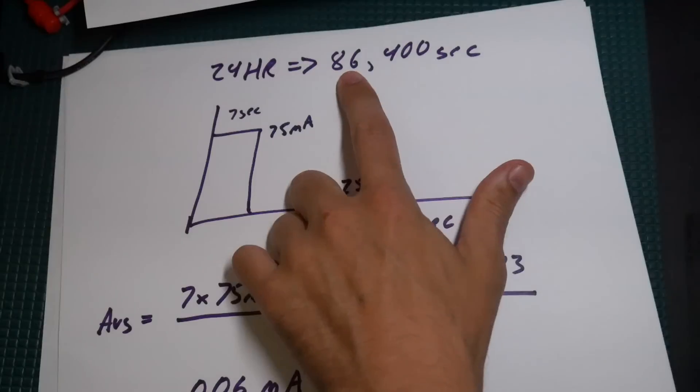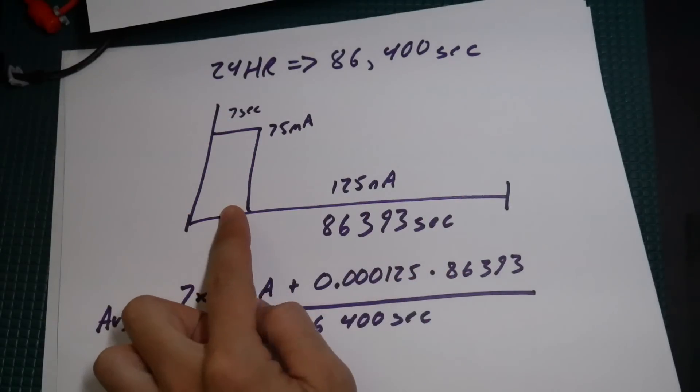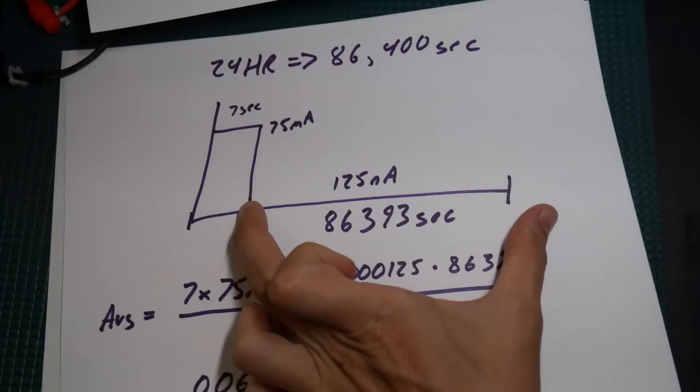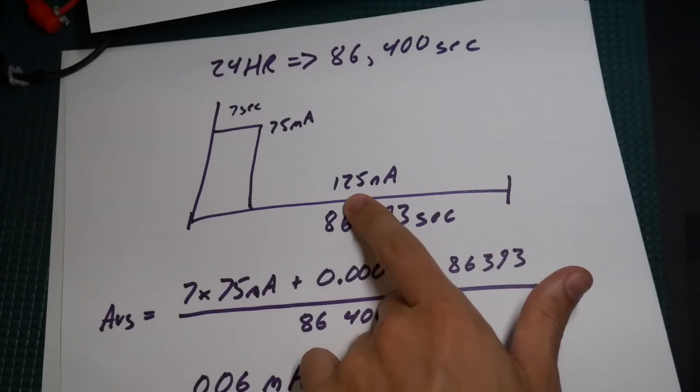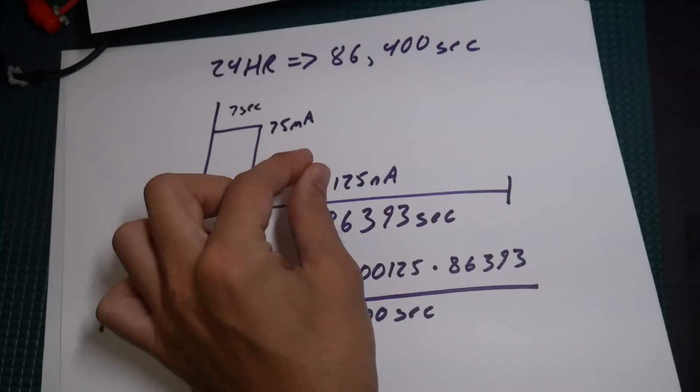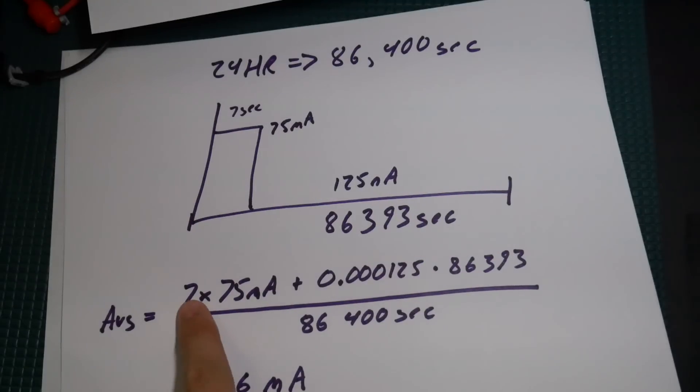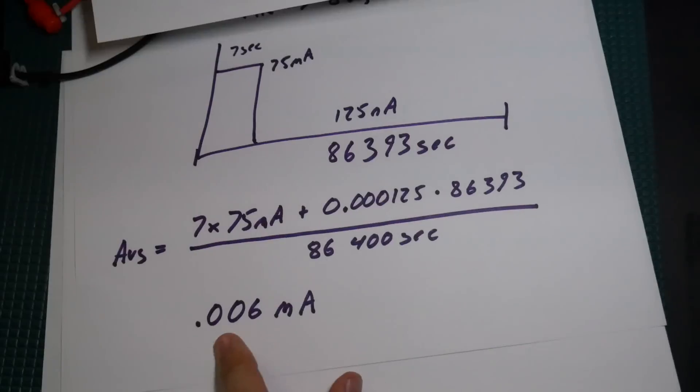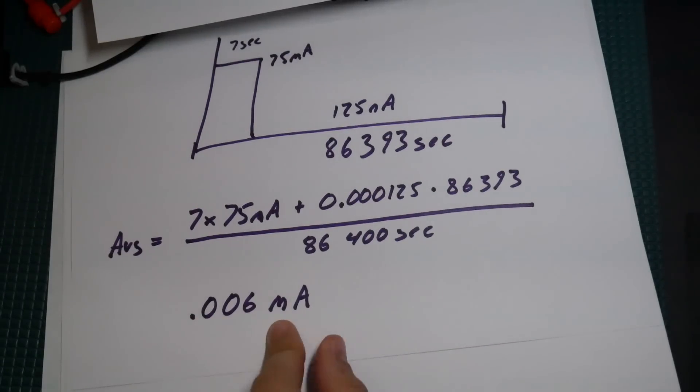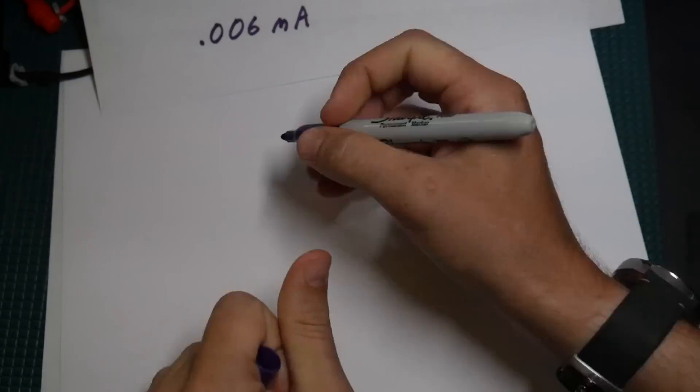I worked through the equations manually. It's pretty straightforward: we wake up one time a day for seven seconds. I'll convert everything to seconds. In 24 hours you have 86,400 seconds, that's your total time. For seven seconds you're on at 75 milliamps and then for 86,393 seconds that's your off time. You're only on for 125 nanoamps, that's your sleep current. To figure out the average we just multiply these two, add them to these two multiplied, and divide that whole thing by 86,400.